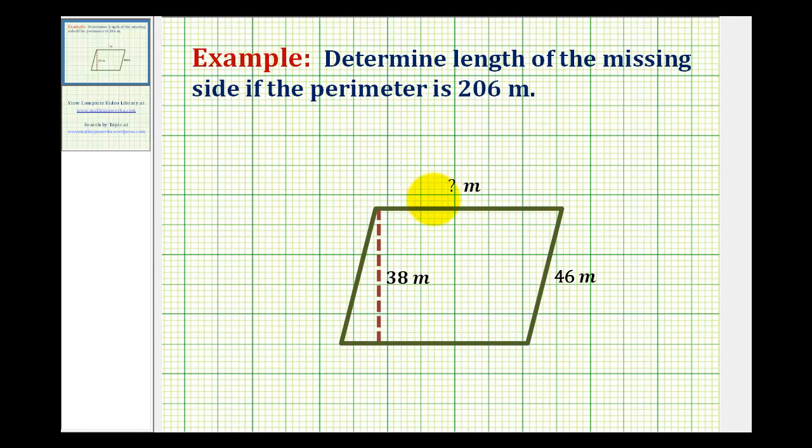We want to determine the length of the missing side here if we know the perimeter is 206 meters.